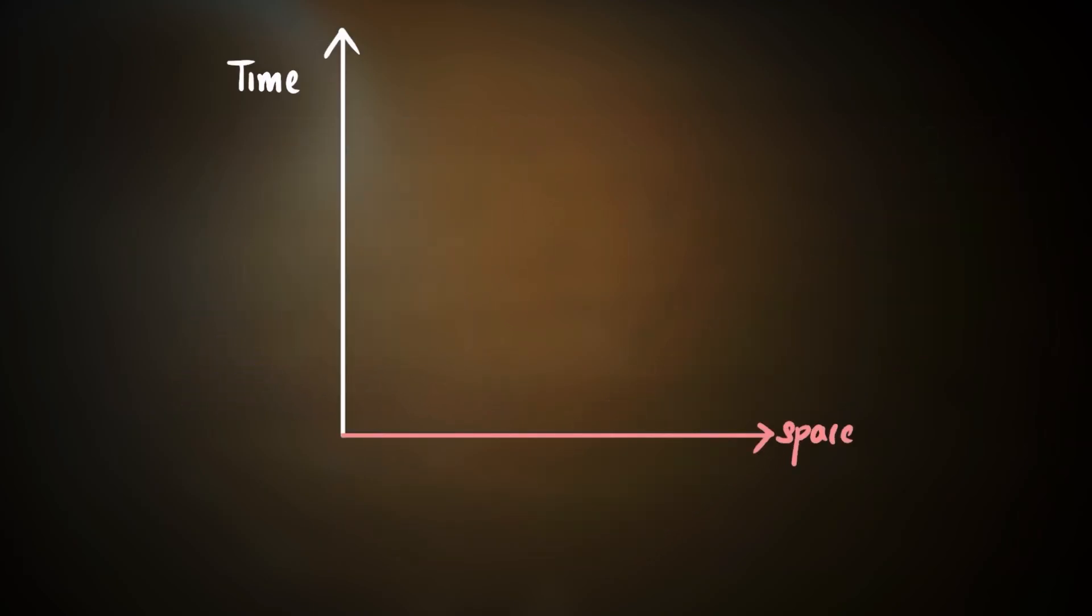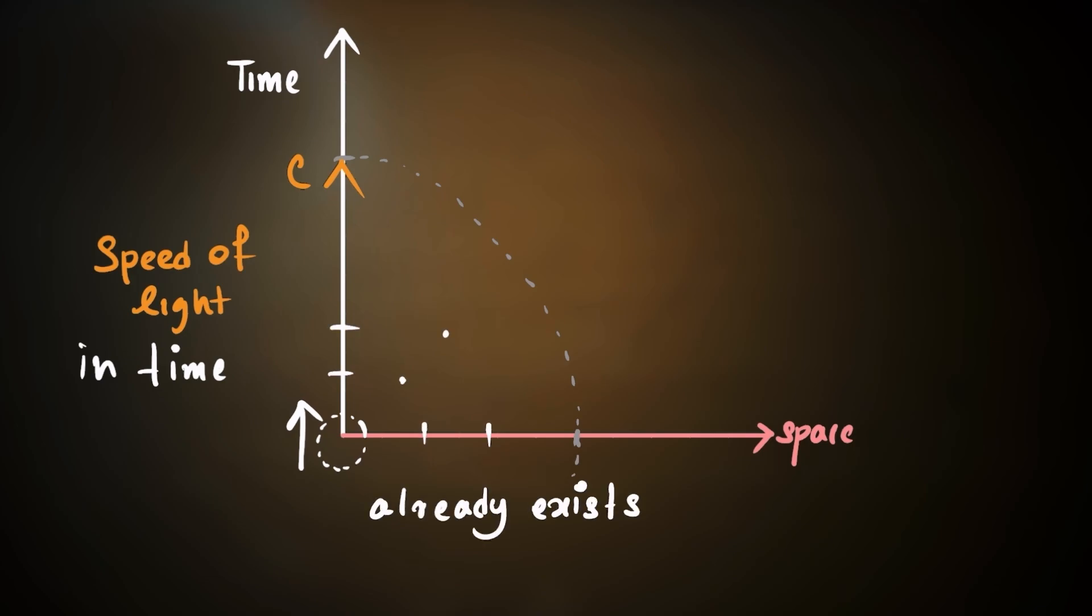According to the Epstein model, we are always moving at the speed of light in the time direction. This suggests that time is not something that we move through, but rather something that already exists. We just experience it one moment at a time.